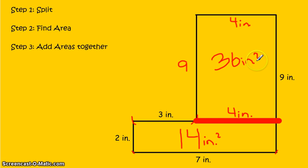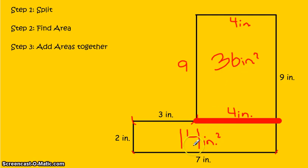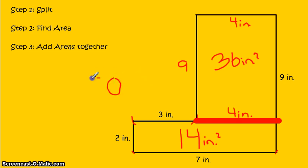The last step for this shape is to add the areas together. Thirty-six plus fourteen: 4 plus 6 is 10, carry the 1, 3 plus 1 is 4, plus 1 is 5. The area of this shape is 50 square inches.